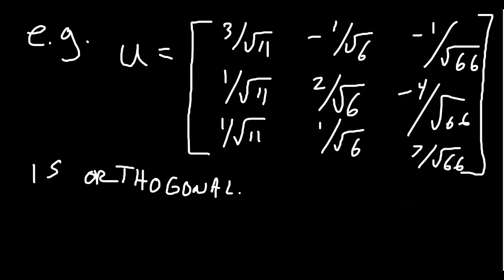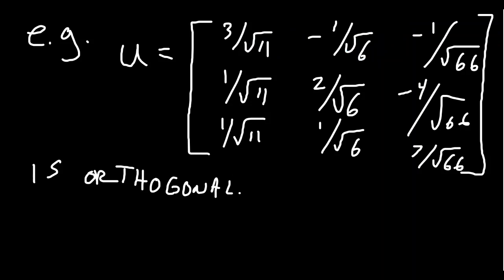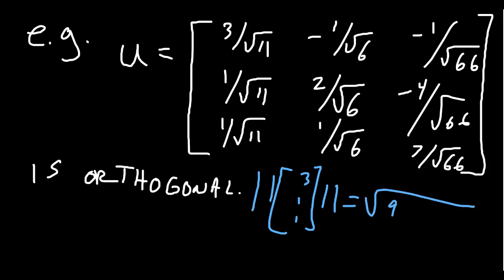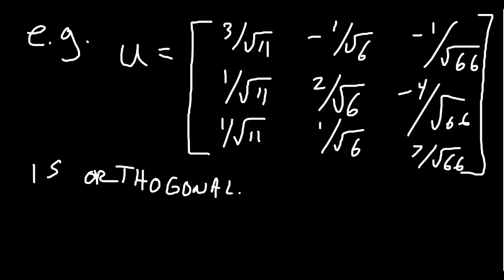Here's a 3×3 example of a real orthogonal matrix. You might wonder why all these square roots appear — sqrt(11), sqrt(6), sqrt(66). To be orthogonal, the columns must be unit vectors. If you take the vector (3, 1, 1) and compute its norm, you get sqrt(9+1+1) = sqrt(11). So (3/√11, 1/√11, 1/√11) is just that vector normalized. Similarly, (-1, 2, 1) has length sqrt(6), and (1, -1, 4, 7) — wait — the third vector has length sqrt(66). These are all normalizations.